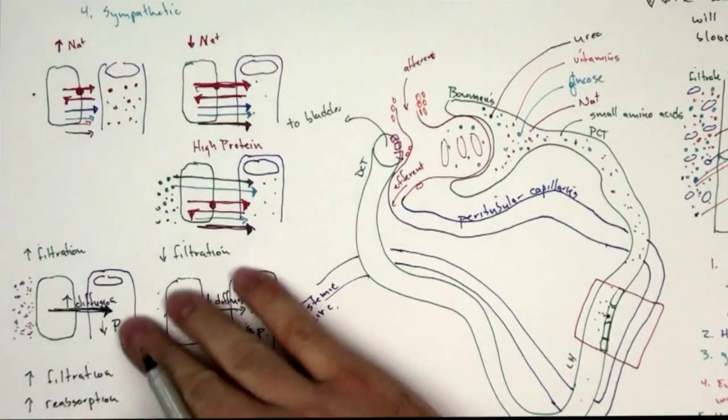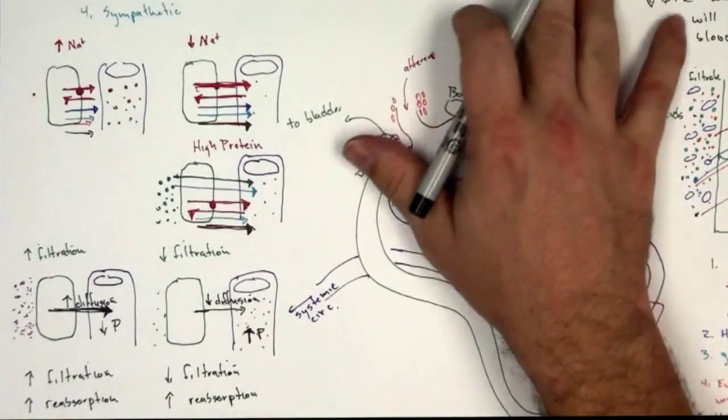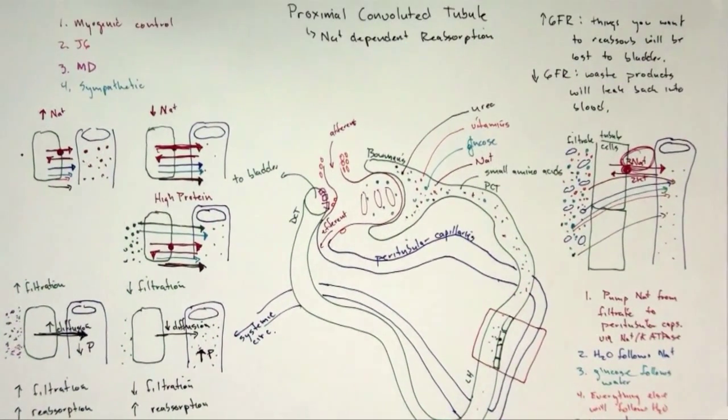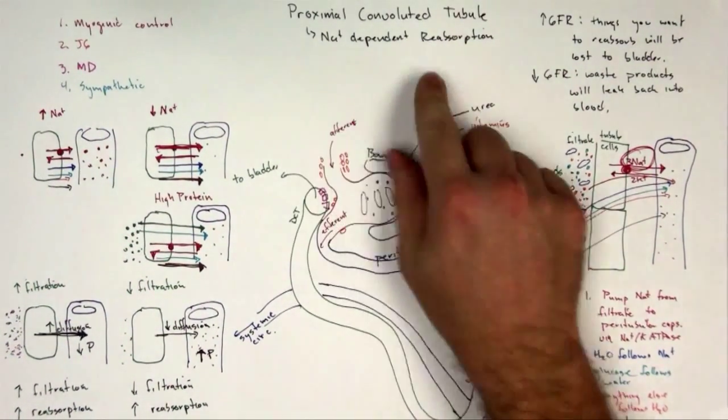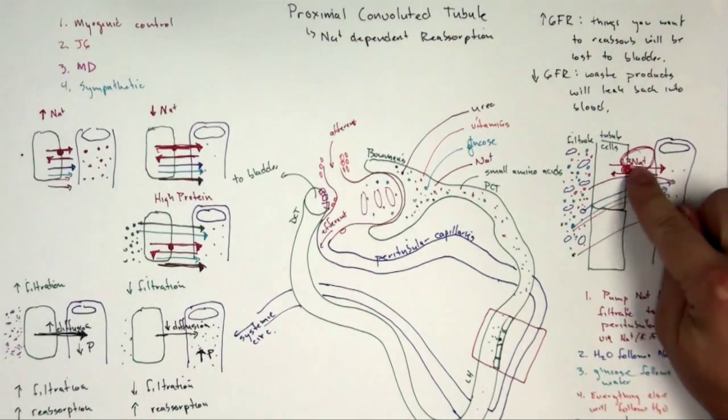So I kind of wanted to point this out to show you the exquisiteness of proximal convoluted tubule filtration. But the main thing that I'm really trying to drive home is that reabsorption depends on sodium. So if there's an imbalance of sodium...